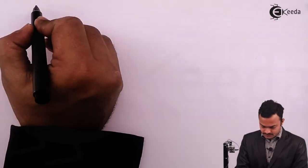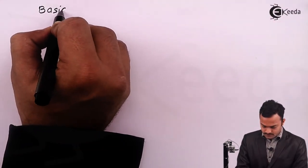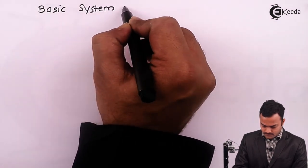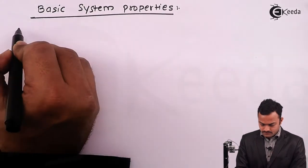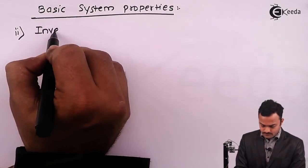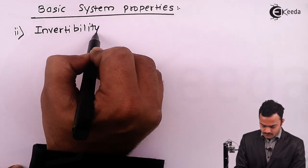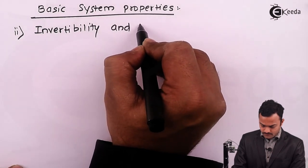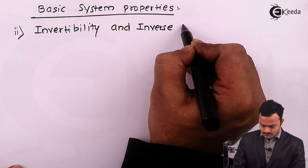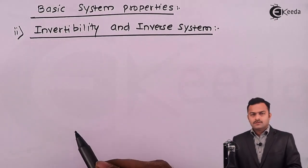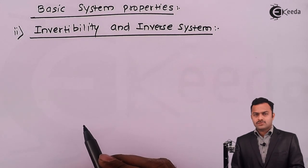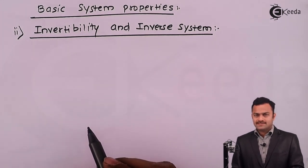Hello students. In this video, we are going to see basic system properties — invertibility analysis. The definition of invertibility is this: a system should give you distinct outputs for distinct inputs.